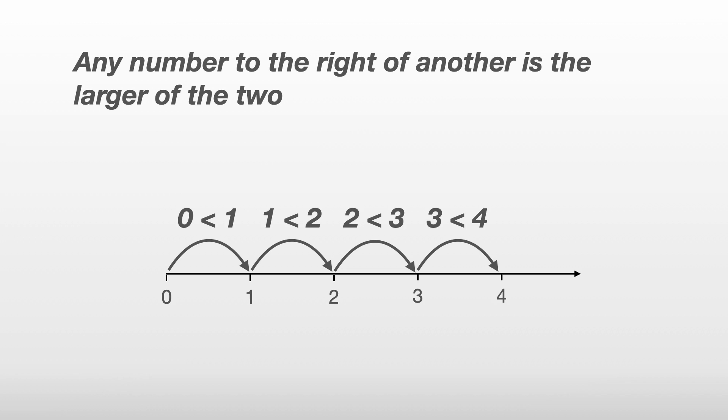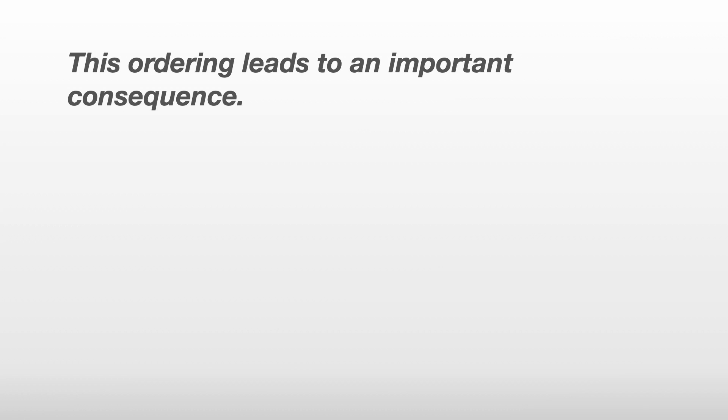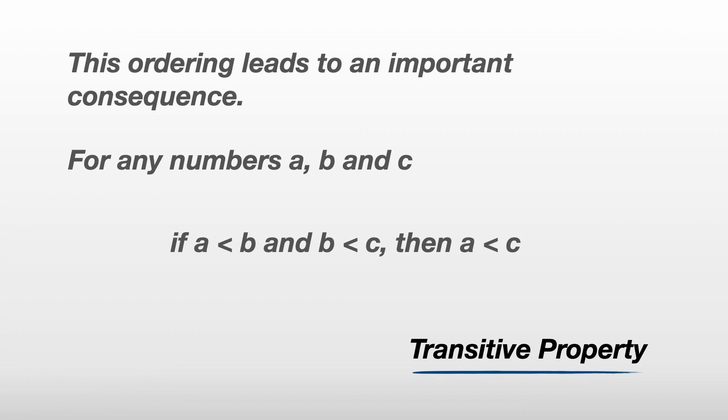We say that numbers are well ordered because each number has its own place on the number line. This ordering leads to an important consequence. For any numbers a, b, and c, if a is less than b and b is less than c, then we can conclude that a must be less than c. This is known as a transitive property, and we use it all the time without ever really thinking about it.